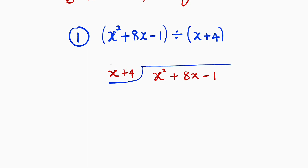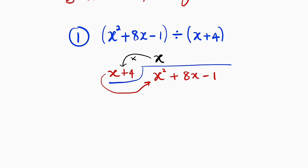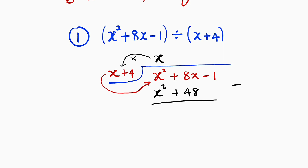In conducting this division, we only use the first term here, which is x, and divide it through by the first term here. We want to find out how many times x can go into x squared — it can go there x times. So we write x to the top. Then we take this x and multiply by the divisor which is x plus 4 and write it just beneath. x times x gives us x squared, and x times 4 gives us 4x. Draw a line and subtract. x squared minus x squared gives us 0. Then 8x minus 4x gives us 4x.